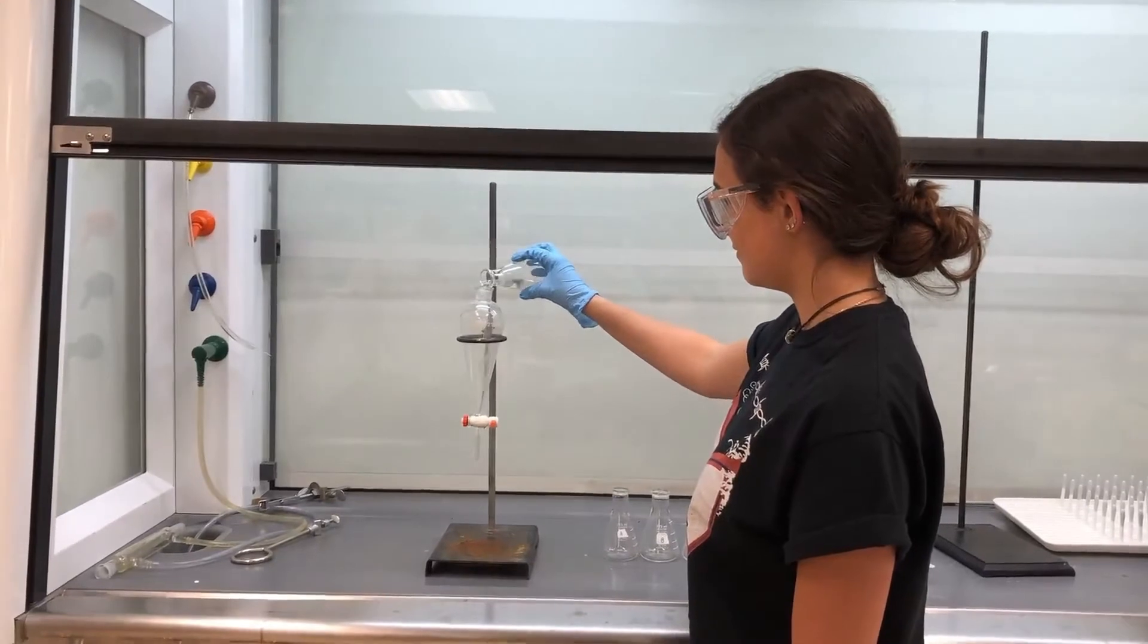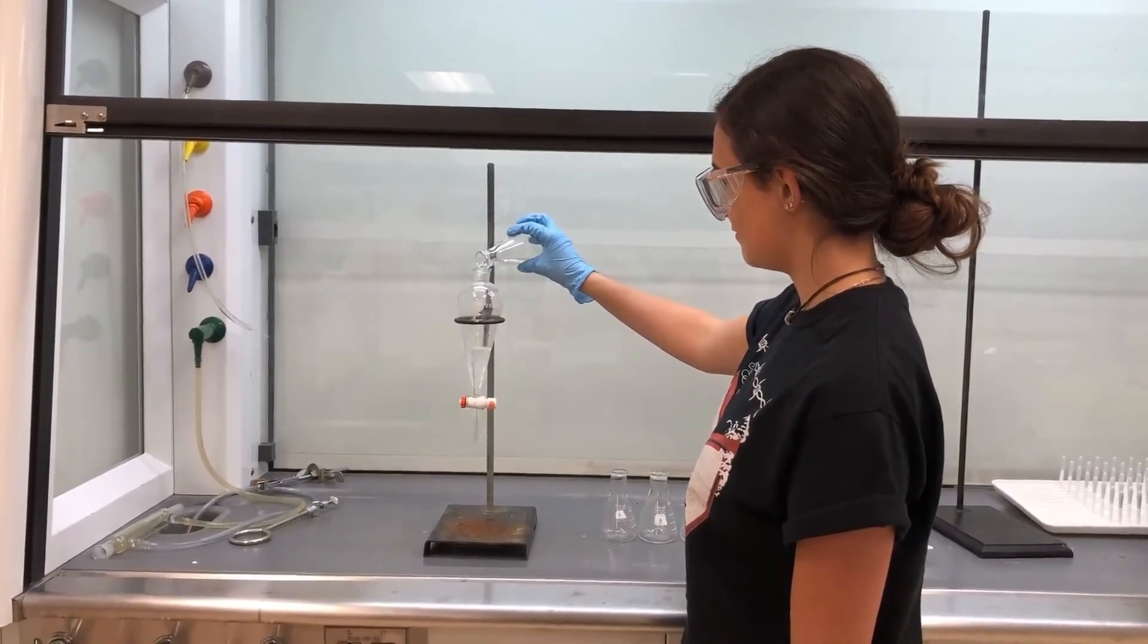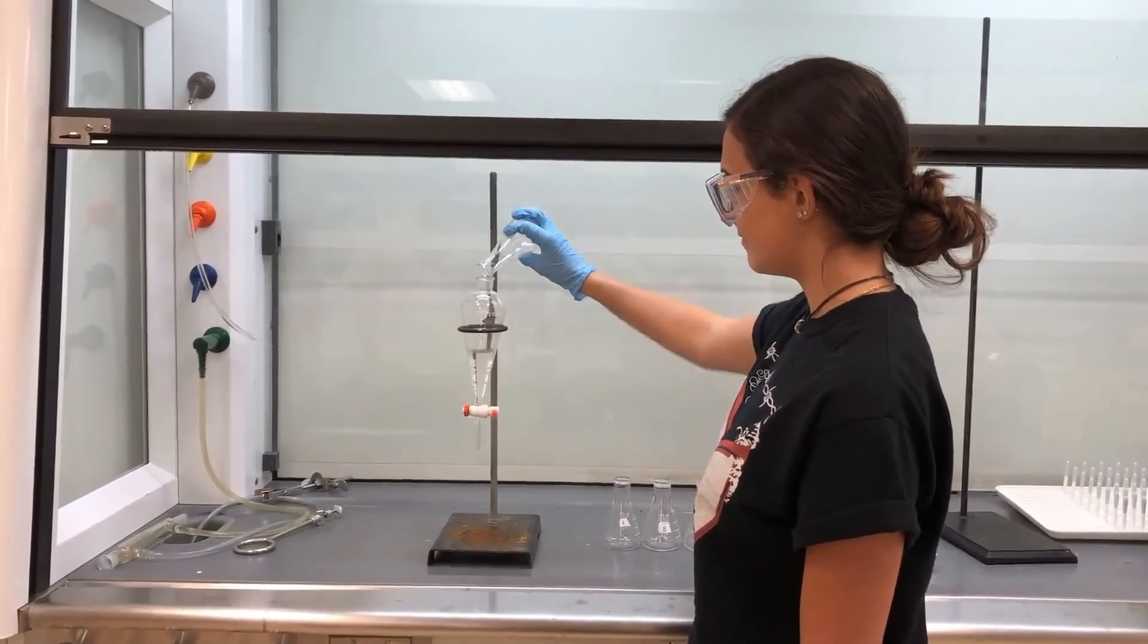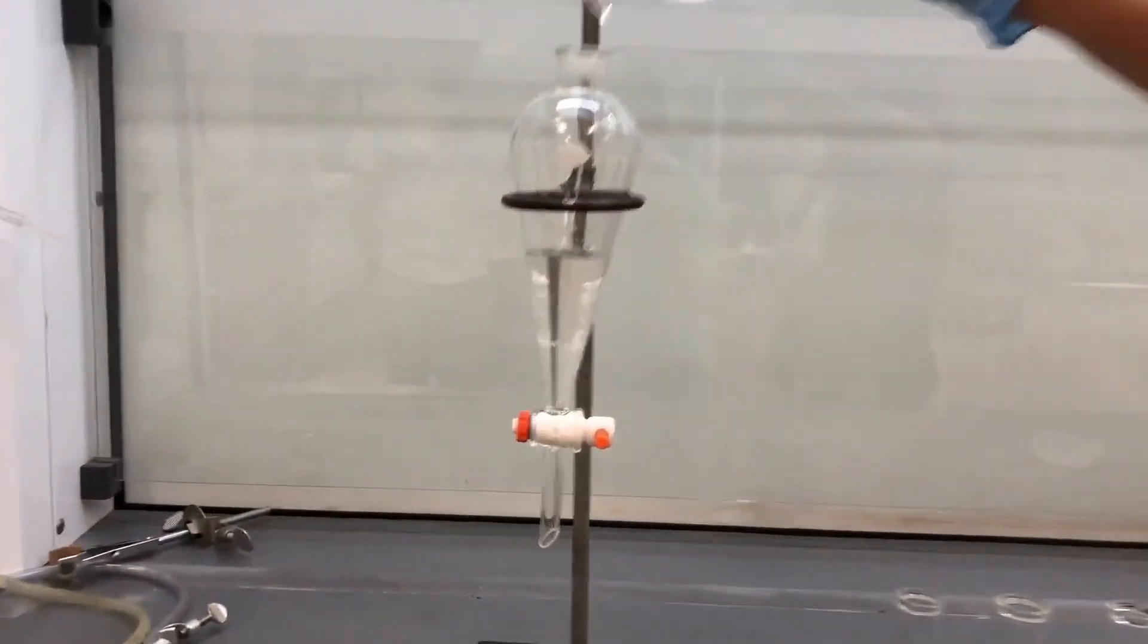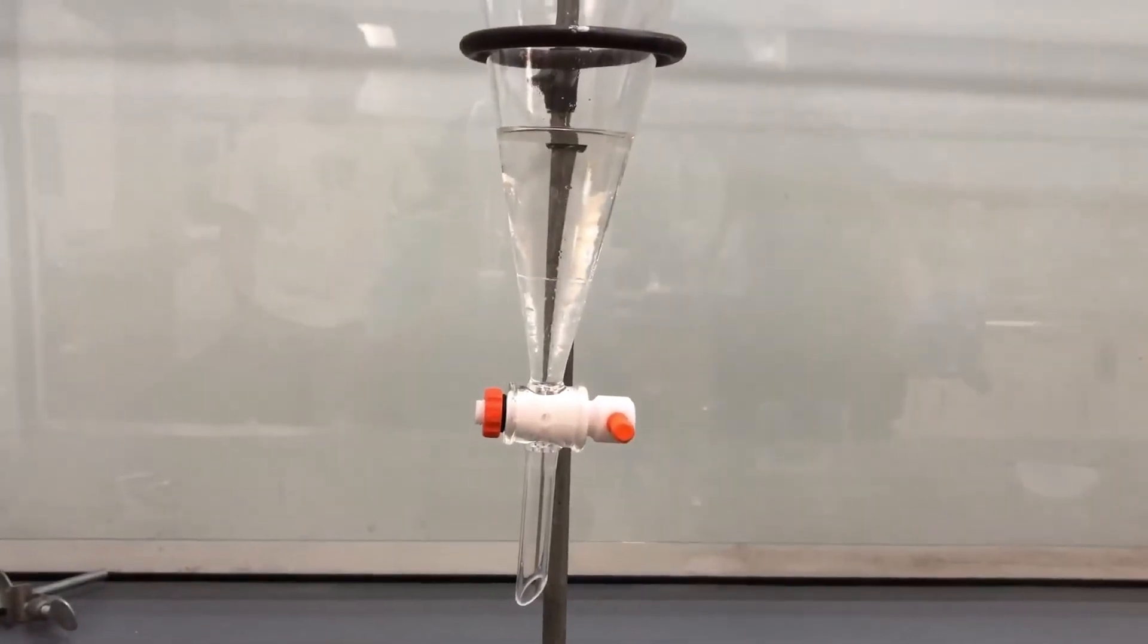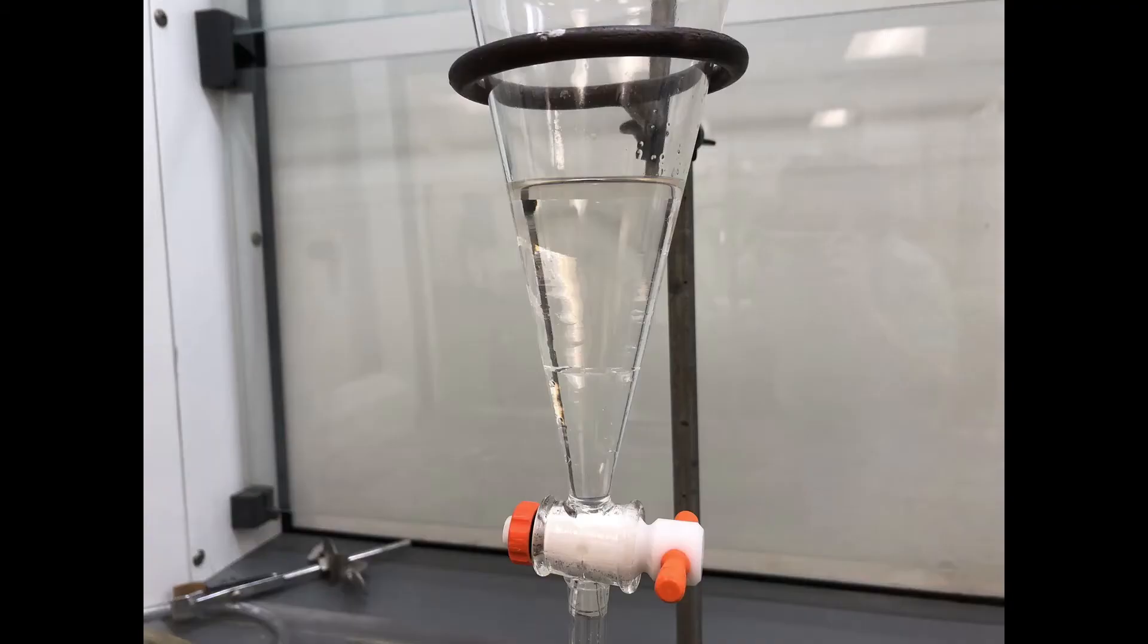You are going to stir diethyl ether and your solid mixture until everything is completely dissolved and then pour that mixture into the sep funnel. Water will then be added. When this happens, you will see two distinct layers form.